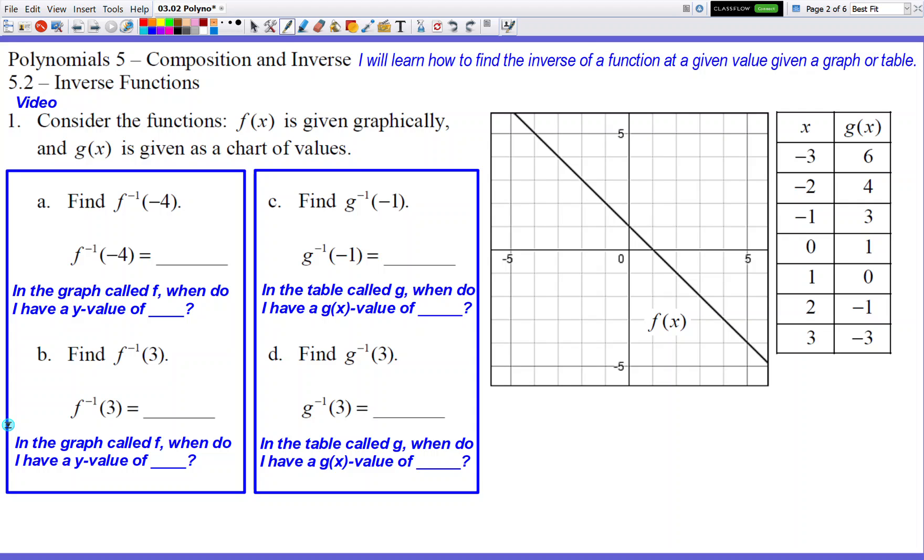So when they write inverse functions, they write it a little different. And a lot of kids, when they see it, they go, oh look, f to the negative 1 power. No, that is not f to the negative 1 power. When you see that negative 1 next to the f or negative 1 next to the g, that is called inverse function notation.